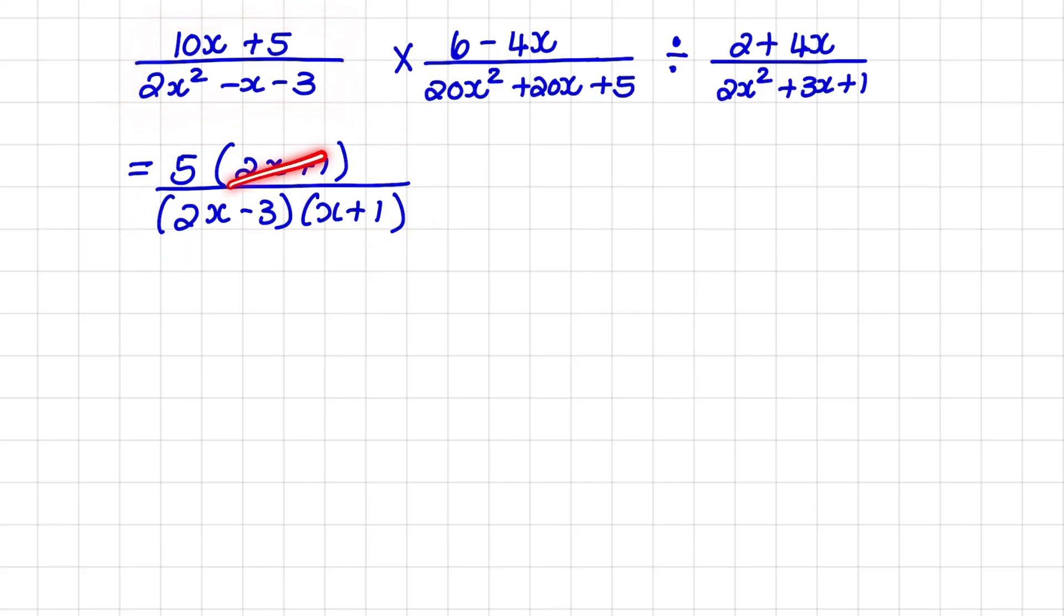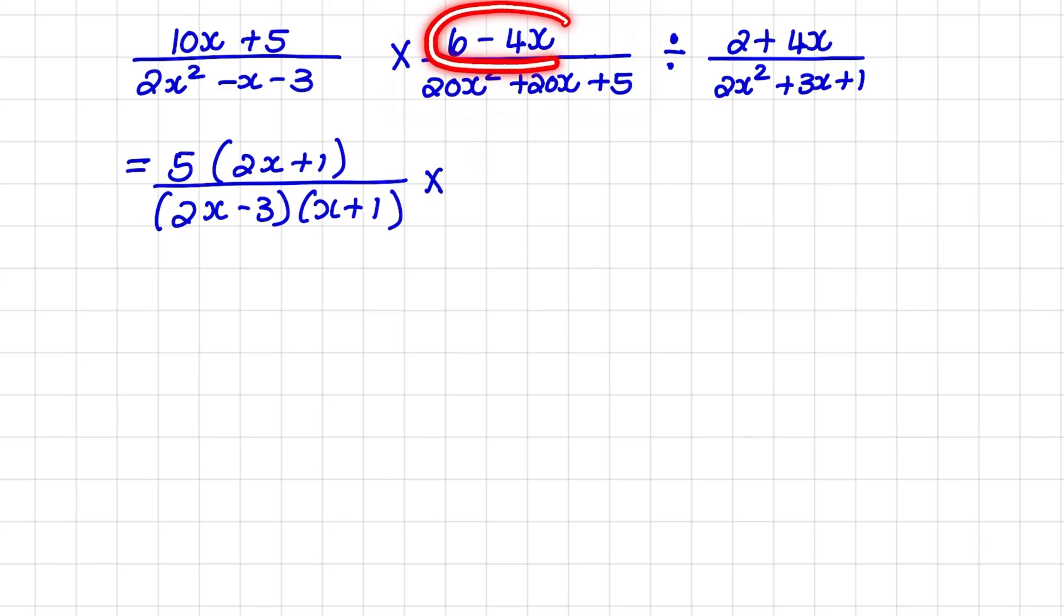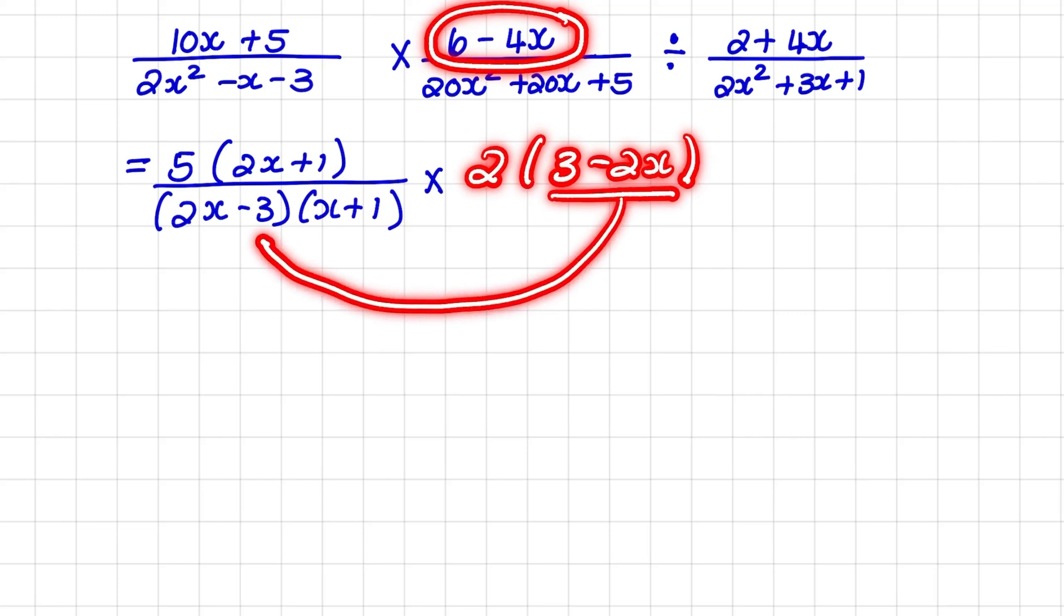Notice there are not any fractions that we can cancel out. So let's move on to our second fraction. In our second algebraic fraction, I can take out a 2 as a greatest common factor in our numerator. But before I do that, I notice that this bracket of 3 minus 2x looks very similar to 2x minus 3.